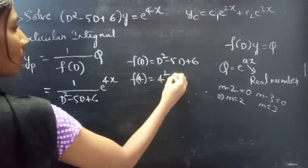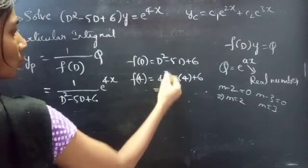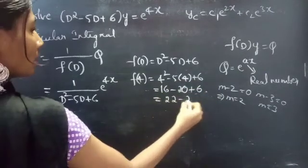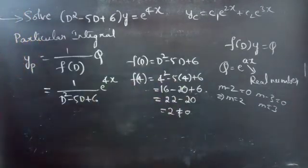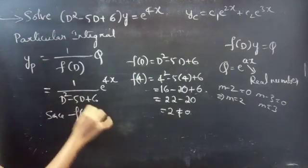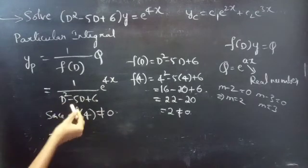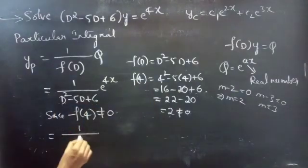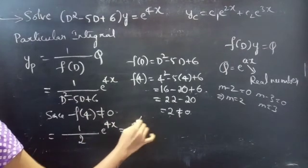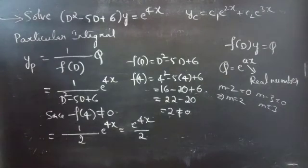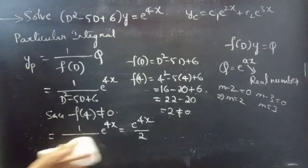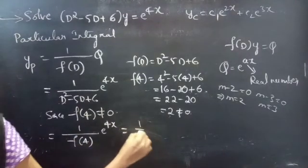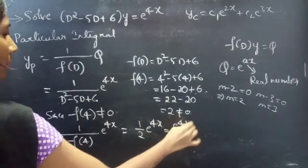Replacing D by 4, we get 4² - 5(4) + 6 = 16 - 20 + 6 = 2. Since f(4) = 2, which is not equal to 0, we can directly substitute. Therefore yp = (1/f(4)) · e^(4x) = (1/2) · e^(4x) = e^(4x)/2.